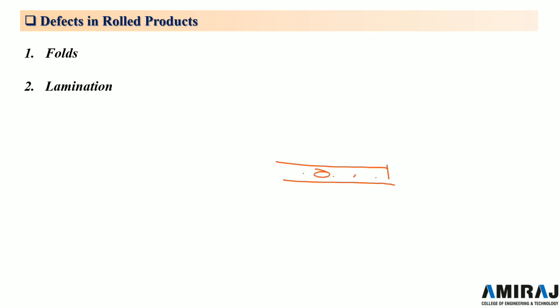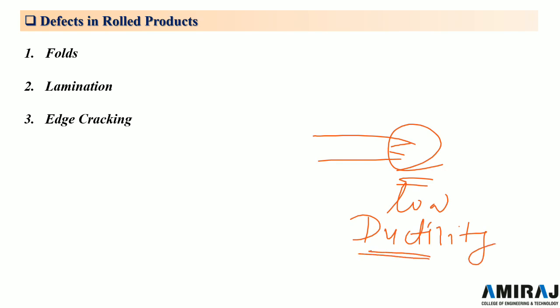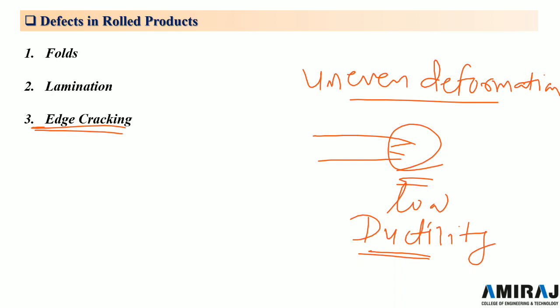The third defect is age cracking. This defect is caused either due to low ductility of the work material or because of uneven deformation near the ends. Cracks are more prevalent during cold rolling because the metal becomes too much work-hardened.